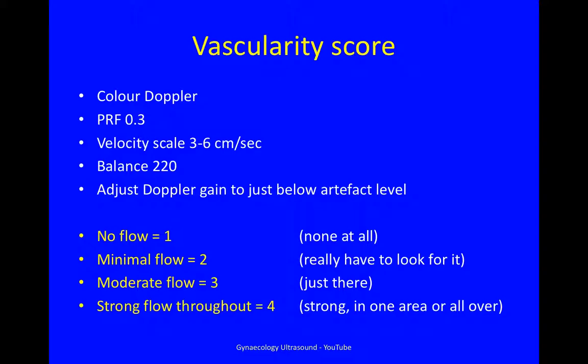You also need to adjust your Doppler gain to just below artefact level. With those settings, when you look at a structure: if there is no flow, that's a score of 1, meaning there is no flow at all. If there is minimal flow, this is a score of 2 — you really have to look for it. Moderate flow is a score of 3, meaning that when you turn your colour Doppler on, the flow is just there. And strong flow throughout, or in one area, is a 4.